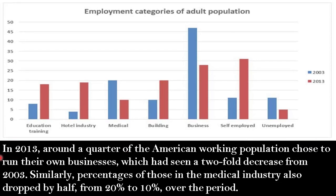Let's begin body paragraph 2. In 2013, around a quarter of the American working population chose to run their own business, which saw a two-fold decrease from 2003. Similarly, the percentage of those in the medical industry also dropped by half, from 20% to 10% over the period.